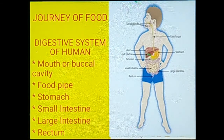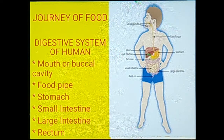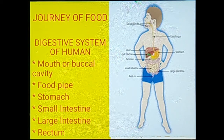In this slide we will learn about the journey of food and each organ associated with it. You can see in the figure the digestive system of a human being — food passes through different organs and each organ has its own job to do, but all organs work together. The parts associated with the digestive system are: first, mouth, also known as buccal cavity; second, food pipe, also known as esophagus; third, stomach; fourth, small intestine; fifth, large intestine; and the last one, rectum.